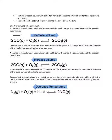How many moles of gas do we have on the left side versus the right side? On the left side, you have 2 moles of carbon monoxide and 1 mole of oxygen gas — a total of 3 moles. On the right-hand side, you have 2 moles of carbon dioxide. So if you decrease the volume, we will shift our equilibrium towards the side with the fewer moles — the products side with 2 moles.